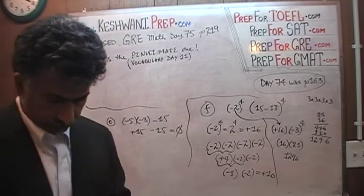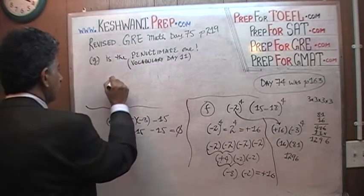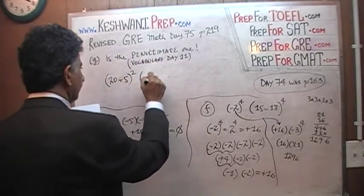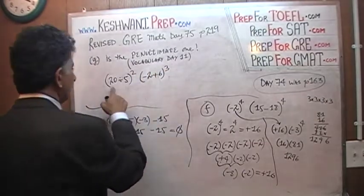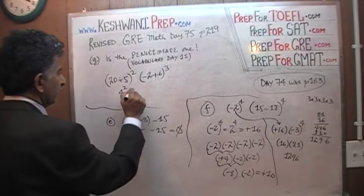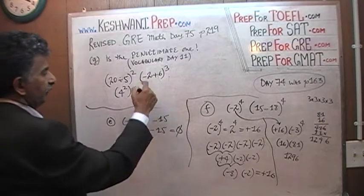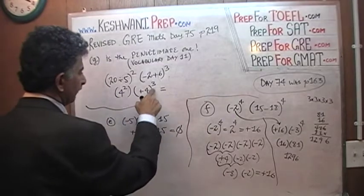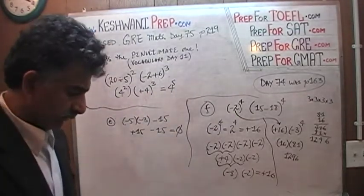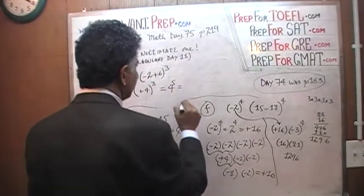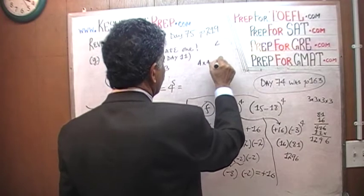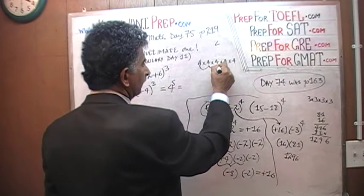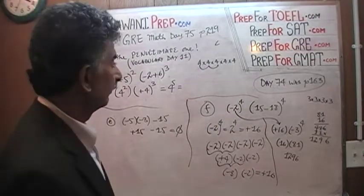G is the penultimate one. Let's see what it says in G. 20 divided by 5 squared times negative 2 plus 6 cubed. 20 divided by 5 is just 4. So this is 4 squared times negative 2, and a positive 6 is going to give us positive 4 — positive 4 cubed. This is a 2 squared times a 4 cubed, so it's just 4 to the 5th. 4 times 4 is 16, 16 times 4 is 64. Then 64 times 16.